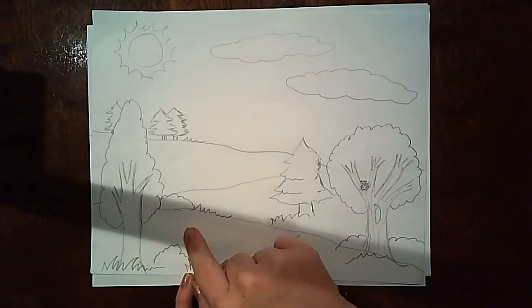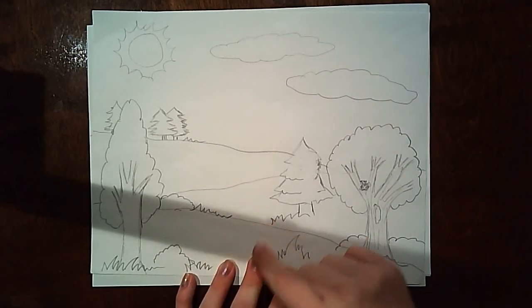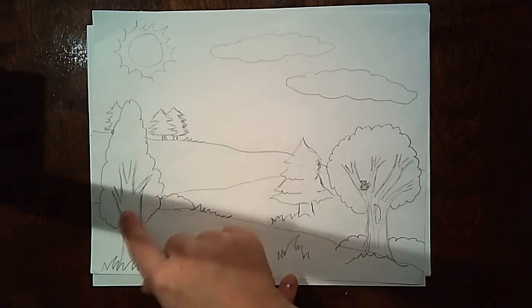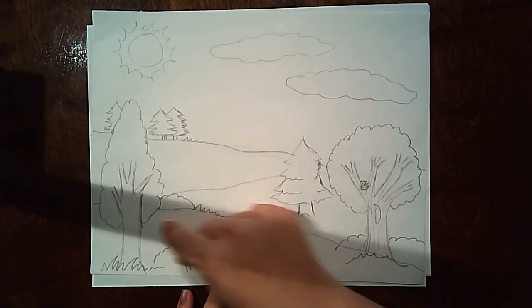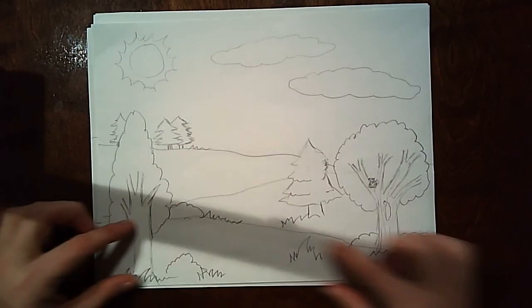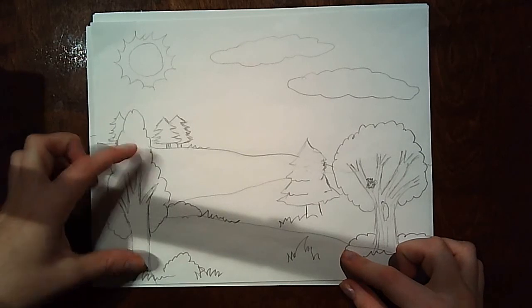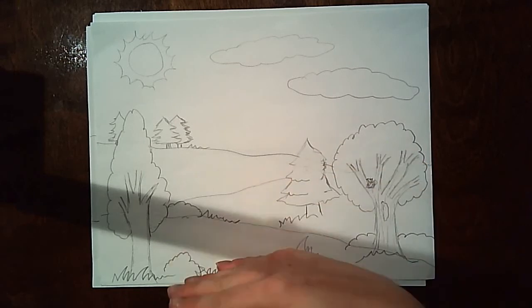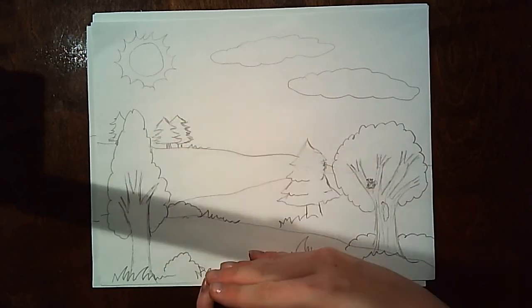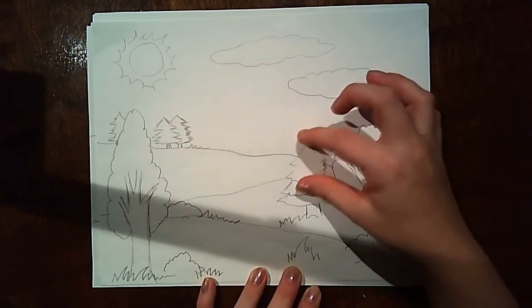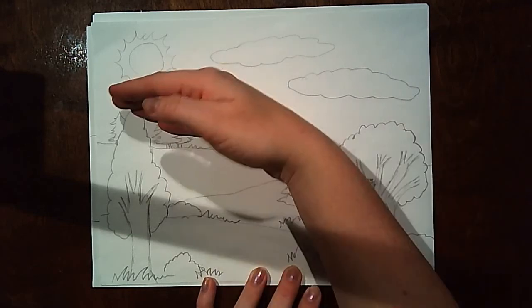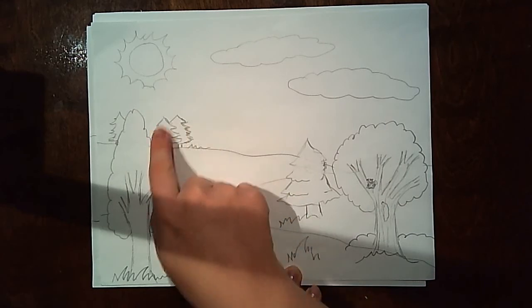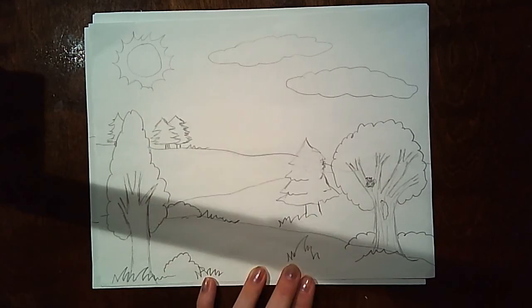So a couple things that I want to go over is the foreground, middle ground, and background. The foreground is closest to the viewer. Anything in the foreground should be our largest objects. Our middle ground is in between the foreground and the background. So that's where I would put my medium size objects. And then I have my background. That's furthest away from the viewer. So I would be drawing small objects in my background.